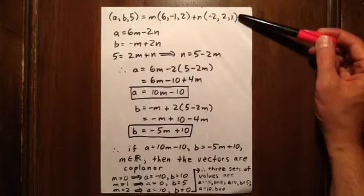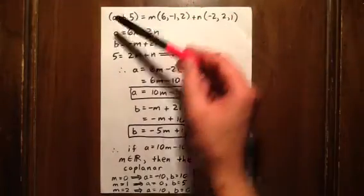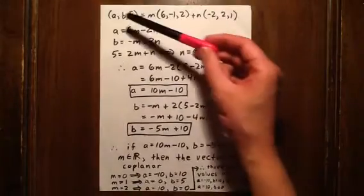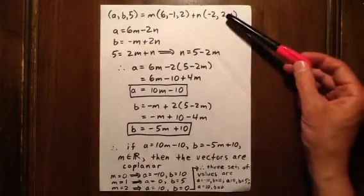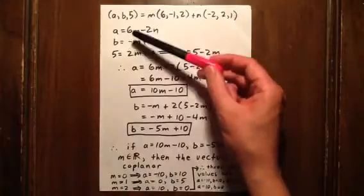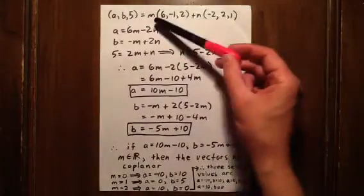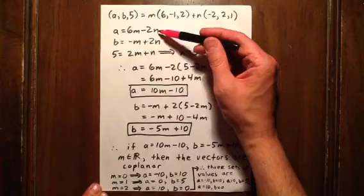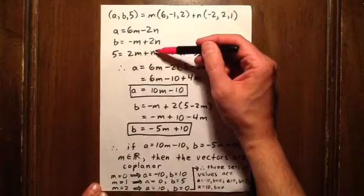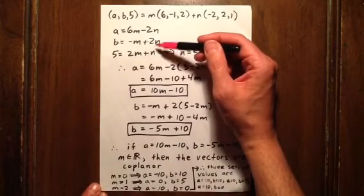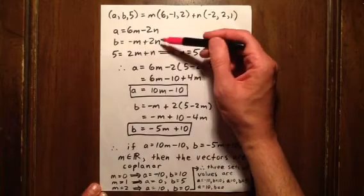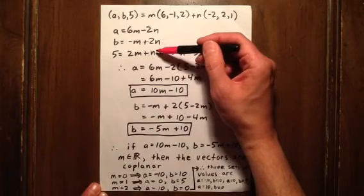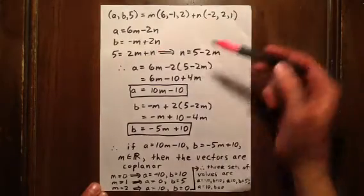The x components tell us A is 6m minus 2n, B is negative m plus 2n, and 5 is 2m plus n. We've got three equations and four unknowns. The first two equations each have three unknowns, but the last equation only has two unknowns, so we're going to focus on that one.